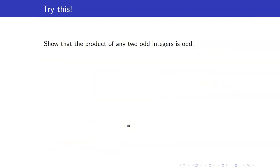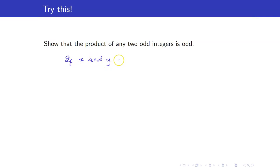As an exercise, try to show that the product of any two odd integers is odd. Note that this is not written in if-then format, but you should first rewrite it as an implication: if x and y are odd, then xy is also odd. Therefore, start by assuming x and y are odd and then show that xy is odd.